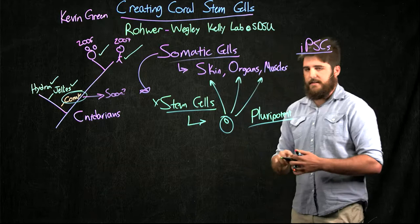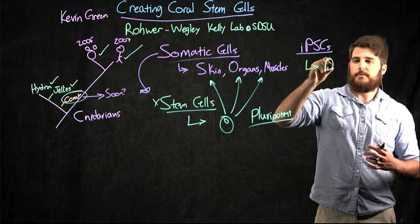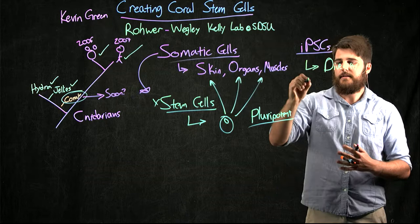The reason why I want these iPSCs is because we can go to coral reefs around the world and categorize the current diversity of these reefs by taking these cells, turning them into stem cells, and freezing them down.